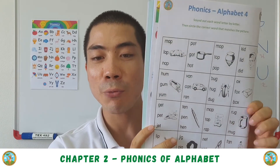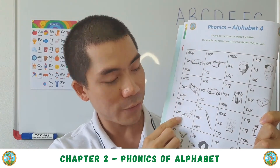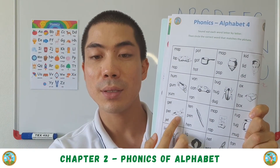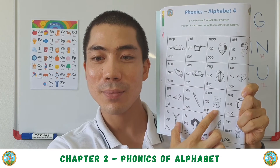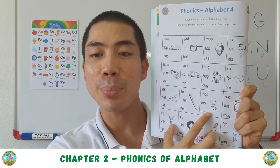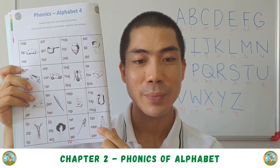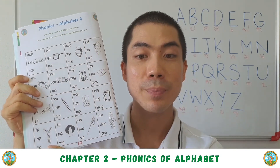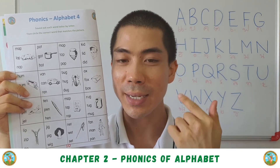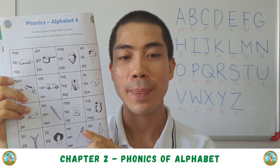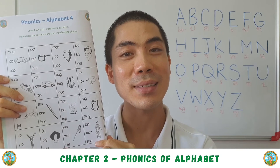Now try to do the rest by yourself, but I will tell you the word and you sound it out on your own: jet, pen, map, mug, zip, wig — w-e-g, wig — net, and then a man.